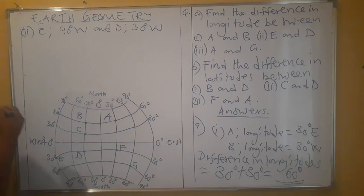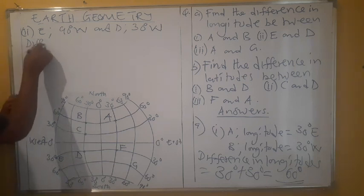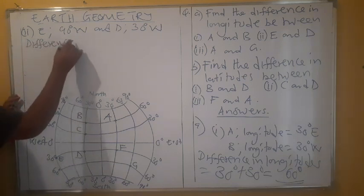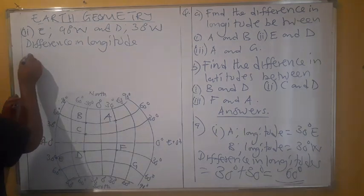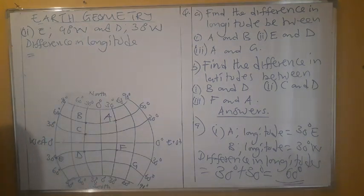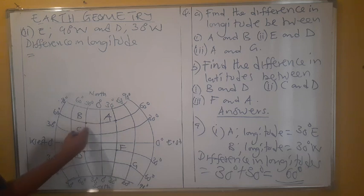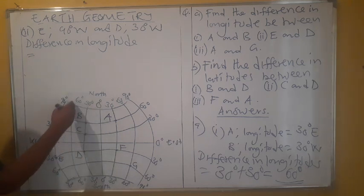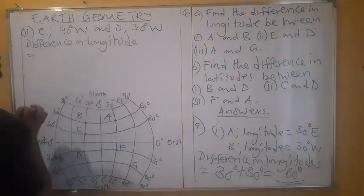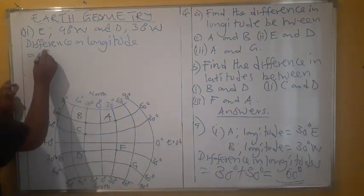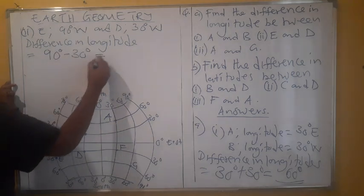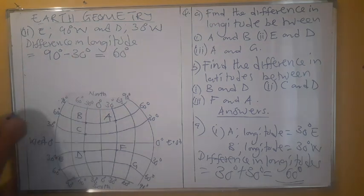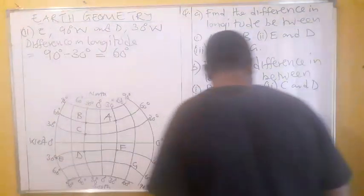Point E and D are on the same side — they are both on the western side. So we are going to find the difference by subtracting. We subtract: 90 degrees minus 30 degrees, and what we get is 60 degrees. That is the difference in the longitude between these two points.